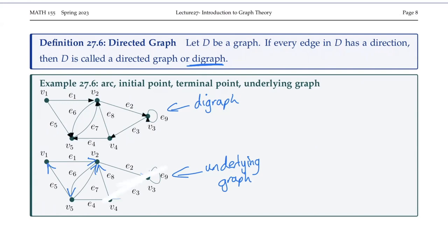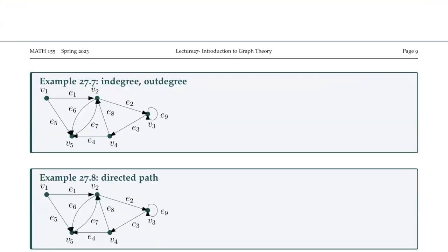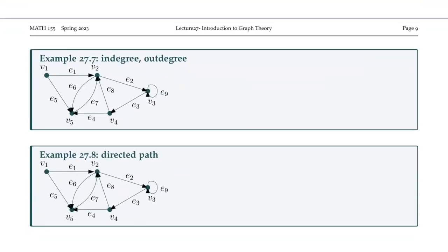Starting from one underlying graph, there are lots of ways in which we could turn this into a digraph. This here is a digraph with the same underlying graph, but the directions are different along those edges. Because these directions exist, there is a start point and an end point — we can talk about initial and terminal points. We can also talk about an arc going from one vertex to another.